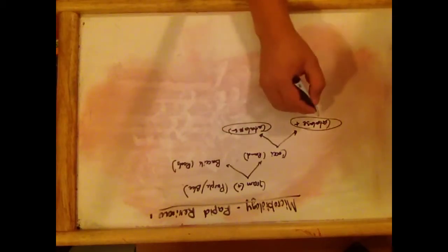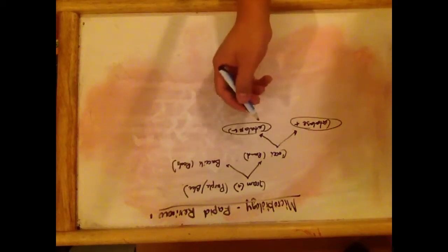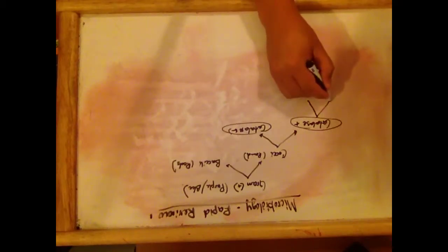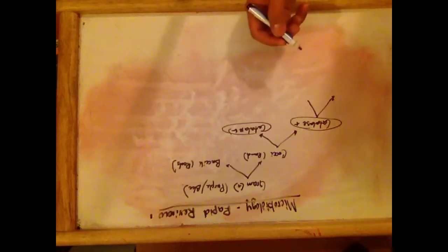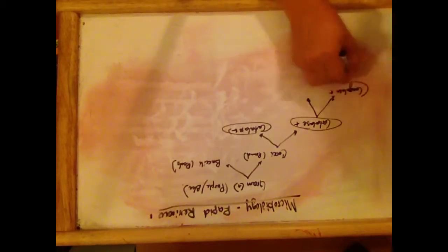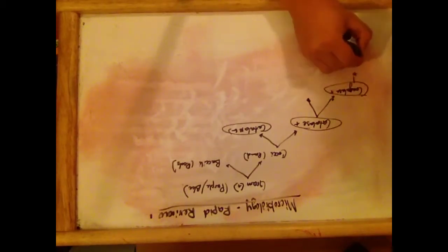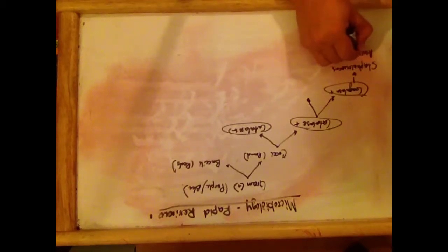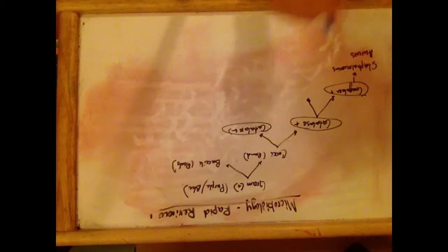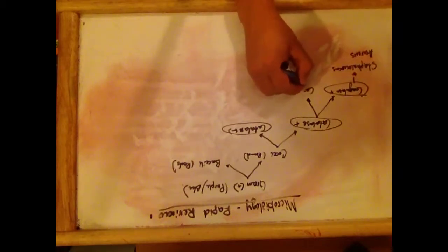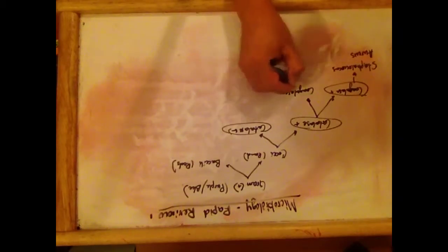There are different types of Staphylococcus. To differentiate them, we need to see if they are coagulase-positive or coagulase-negative. Those that are coagulase-positive are Staphylococcus aureus. Now we have the other Staphylococcus, which are coagulase-negative.